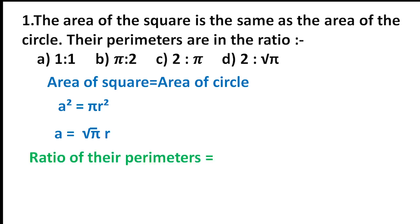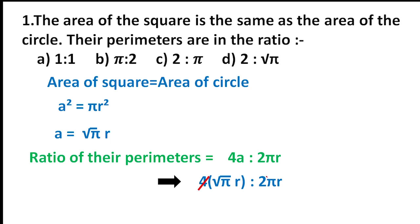We need to substitute that in the perimeters. The ratio of their perimeters: 4a and 2πr are the perimeters of the square and circle. So we need to find 4a : 2πr. Instead of a we substitute √π · r, so it will be 4√π · r : 2πr. We can cancel 4 and 2, and r also cancels, giving us 2 : √π. So our fourth option is correct.